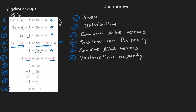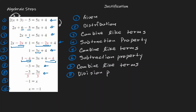Looking at the next line — step 7 — it seems like we combined like terms one more time. For step 8, it seems like we divided by 3, so we can say there's a division property. For step 9, what happened is we simplified. And at the end, step 10, it seems like we multiplied by negative 1.